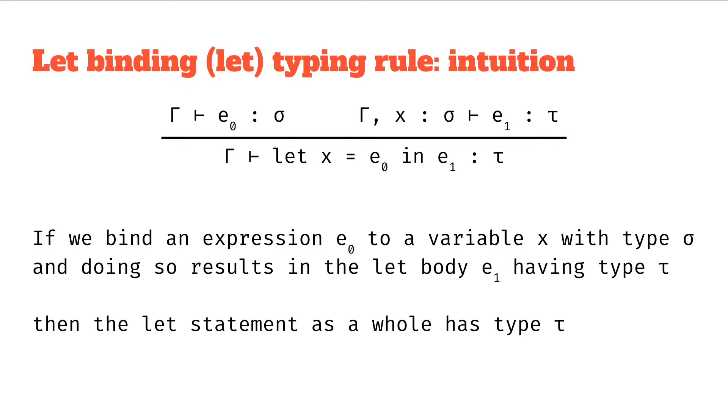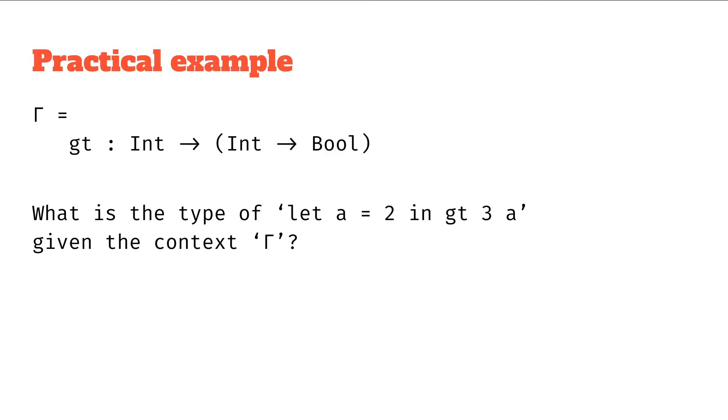Let's see a practical example, hopefully that might help. We've got some context gamma where we have this assignment for gt, saying that gt has the type int to int to bool. So it's a function that takes in an integer and returns another function from integer to bool. And given a question like: what is the type of let a equals 2 in gt 3 a, given the context gamma, we can then answer that with our rule.